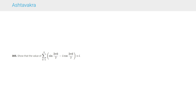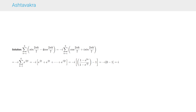Question 305 says: show that Σ(k=1 to 6) [sin(2πk/7) - i cos(2πk/7)] = i. We factor out -i, leaving cos(2πk/7) + i sin(2πk/7) = e^(i2πk/7) inside. Applying the geometric series with first term e^(i2π/7) and common ratio e^(i2π/7), it becomes -i · (1 - e^(i2π))/(1 - e^(i2π/7)). Since e^(i2π) = 1, the numerator is 0 and after simplification the result is i.